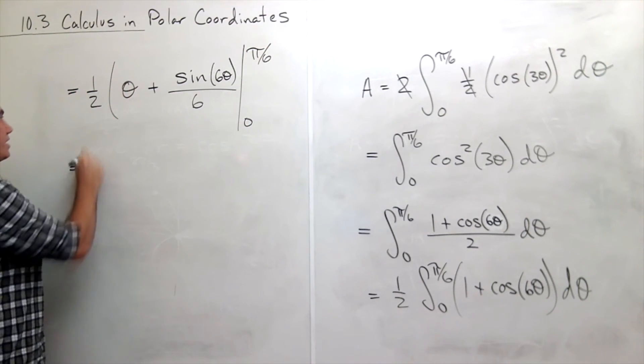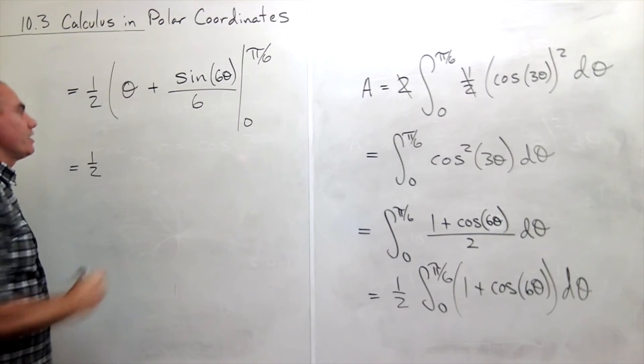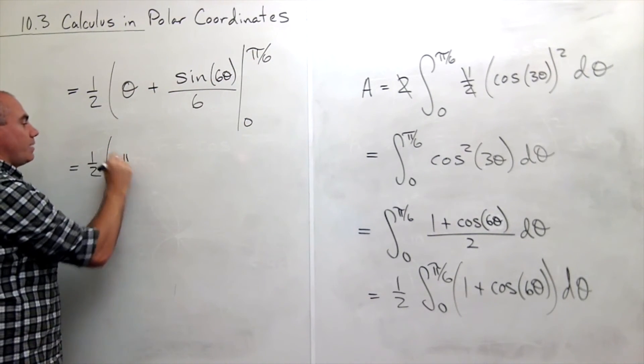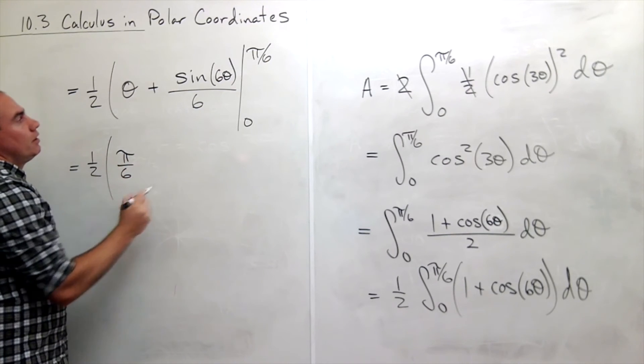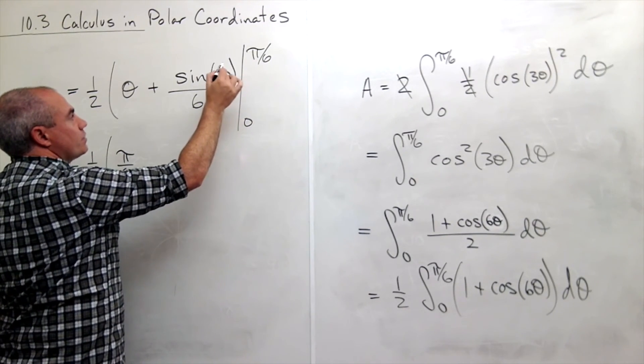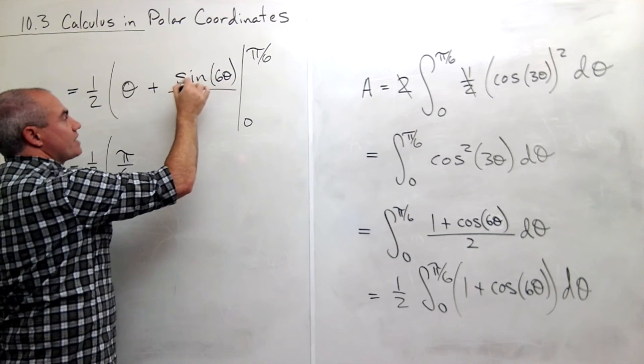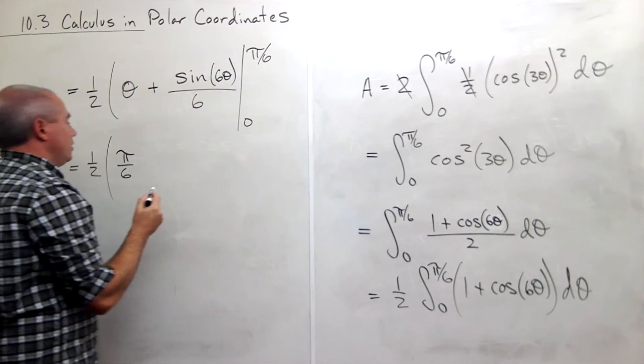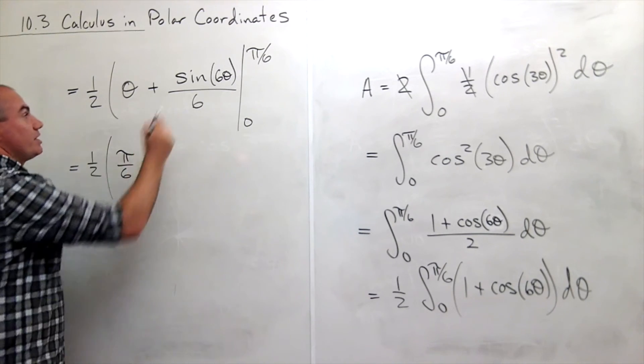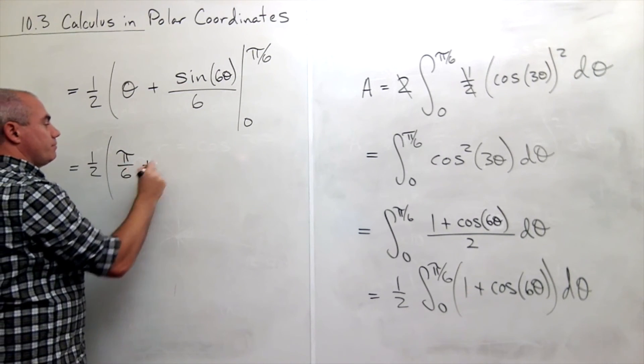Let's plug things in. I still have a one half sitting outside. Let's plug in the pi over six. I plug it in. I get pi over six. Plug in pi over six and I get six times pi over six which is pi. So I have sine of pi. What's sine of pi? It's zero. So I just get zero over six which is plus zero.